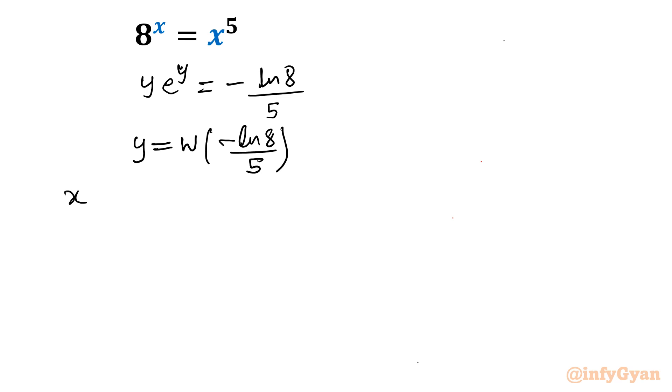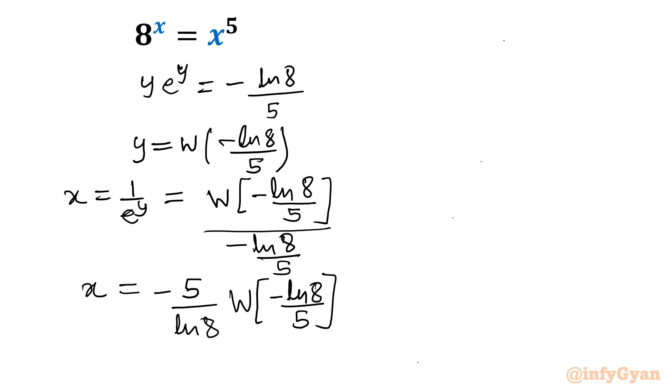And x we know equal to 1 over y. From the above two equations, so you will write 1 over x. So that value will come out W minus ln 8 over 5 divided by minus ln 8 over 5. So x will come out minus 5 over ln 8 and then W Lambert function minus ln 8 over 5. This is our answer in terms of W.